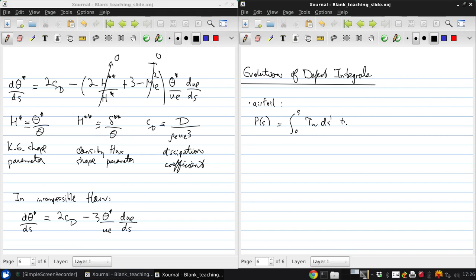Plus the integral from 0 to s of the negative of the mass defect times ds prime. So these primes are just because this is a dummy variable of integration rather than the actual s, which appears in the bounds of the integral.